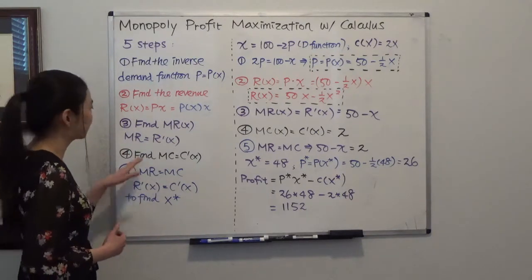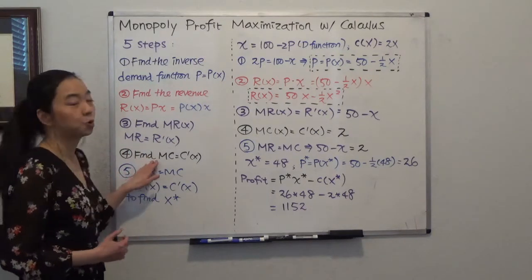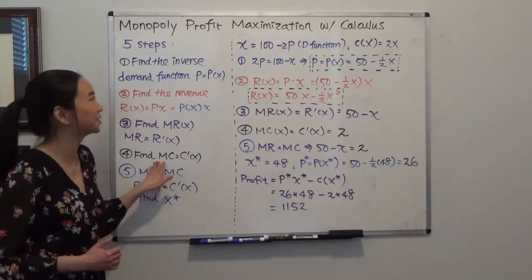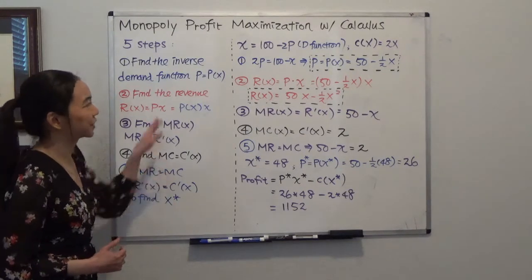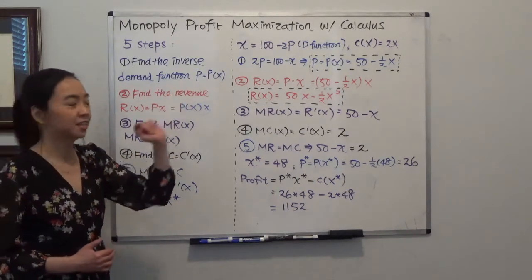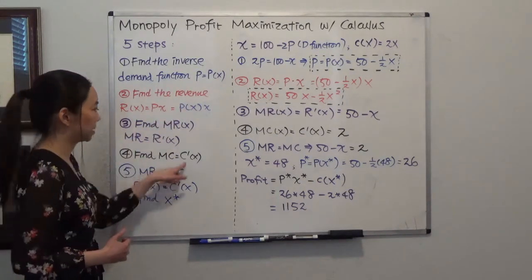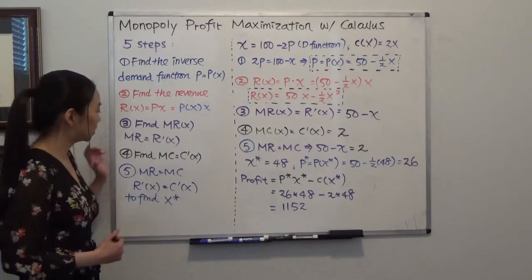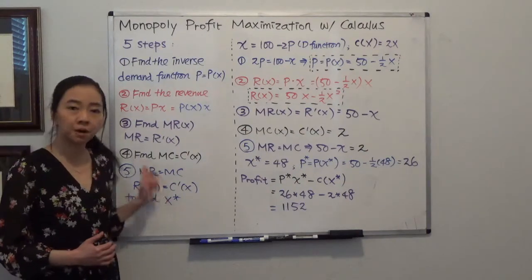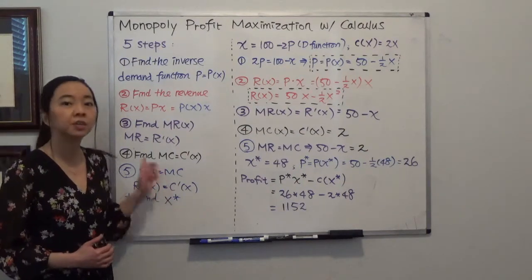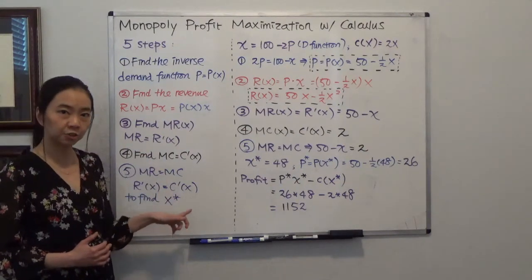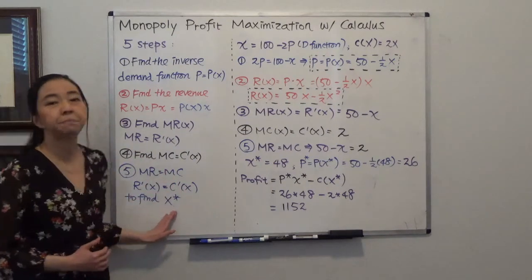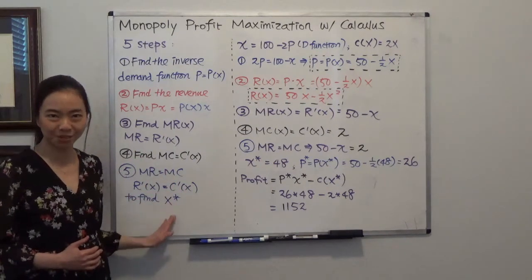The fourth step is that you are going to take the derivative of the cost function to find the marginal cost. And finally, you're going to set marginal revenue equal to marginal cost to find the profit-maximizing quantity.